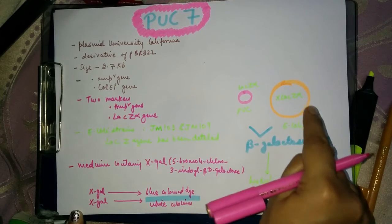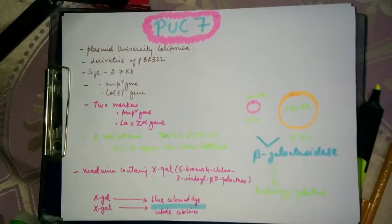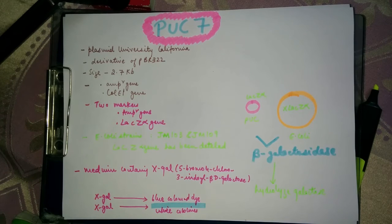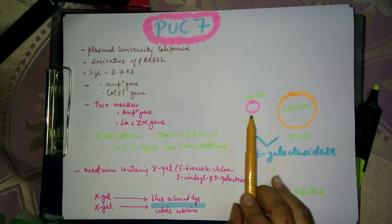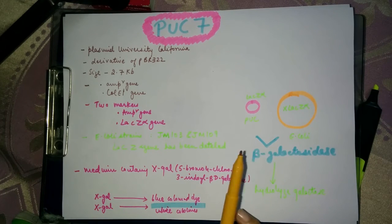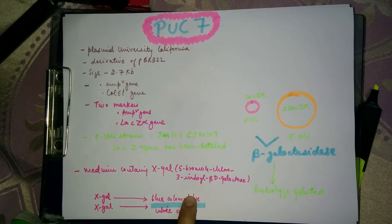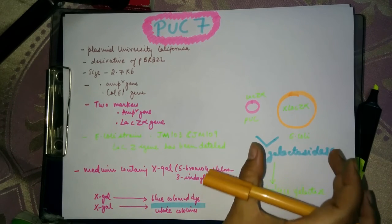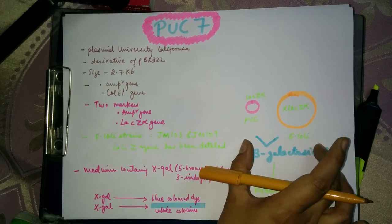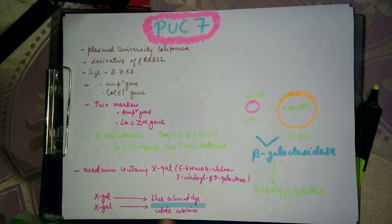To summarize: the E. coli cell lacks the lac Z alpha gene, which is present on the PUC vector. Within the lac Z alpha gene of the PUC vector there is a polylinker region containing several unique restriction enzyme sites for DNA insertion. When placed on X-gal medium, blue colored colonies indicate that the lac Z alpha gene is intact — meaning PUC and E. coli machinery together synthesize active beta-galactosidase, which hydrolyzes X-gal to yield blue color.